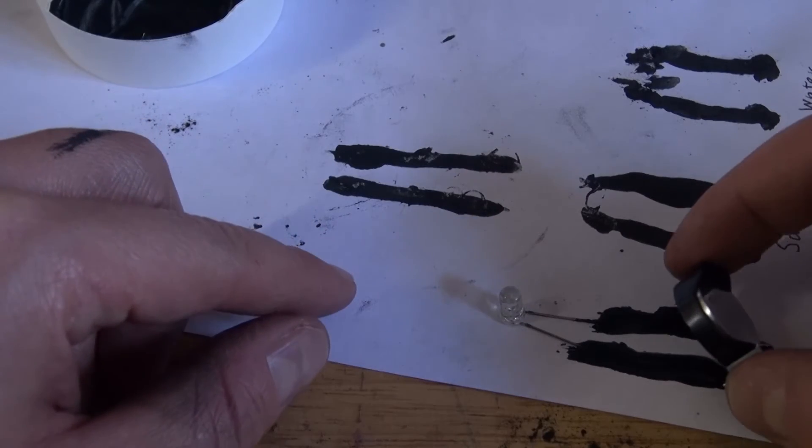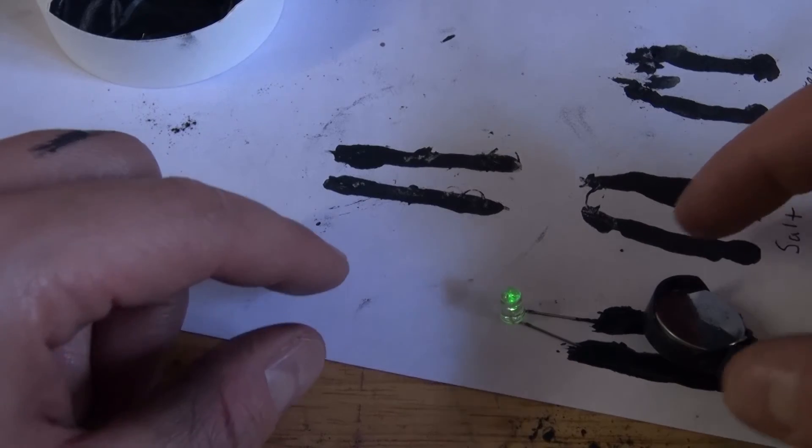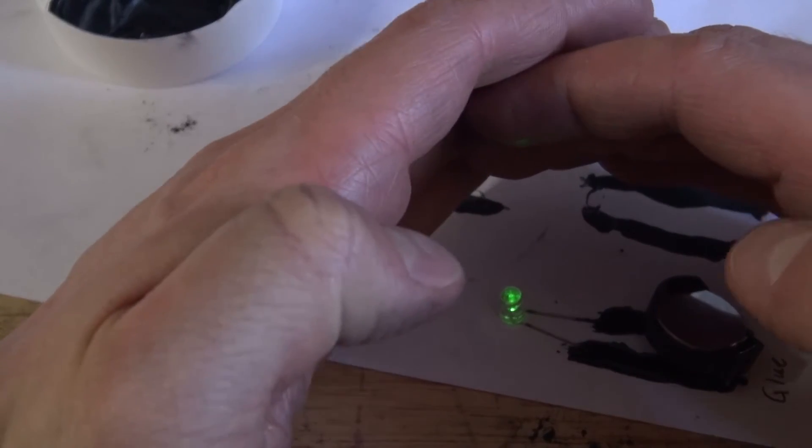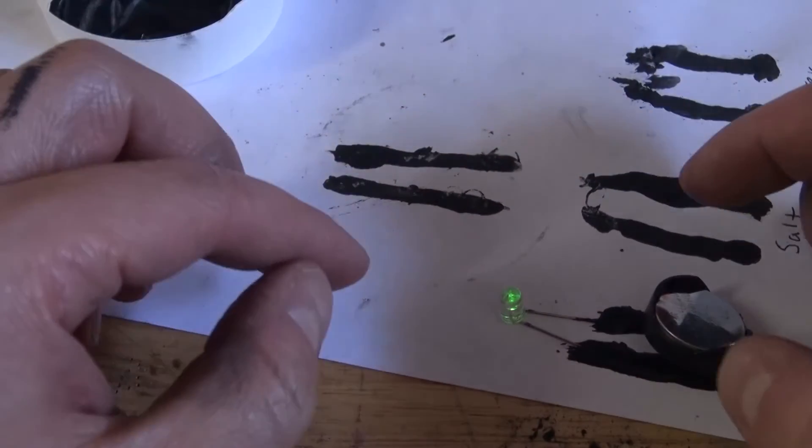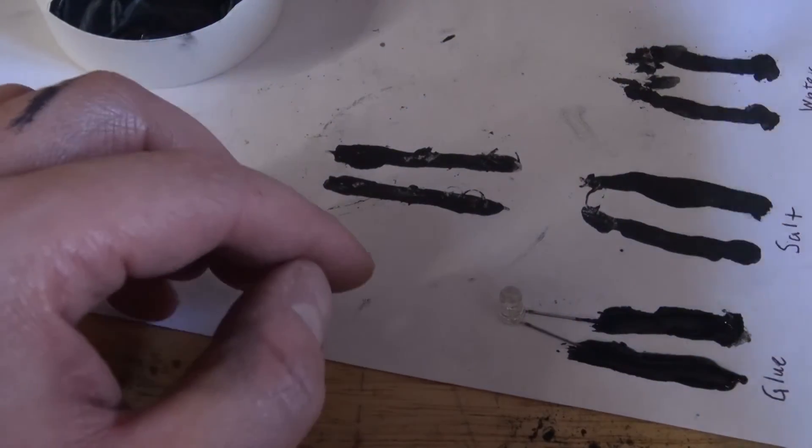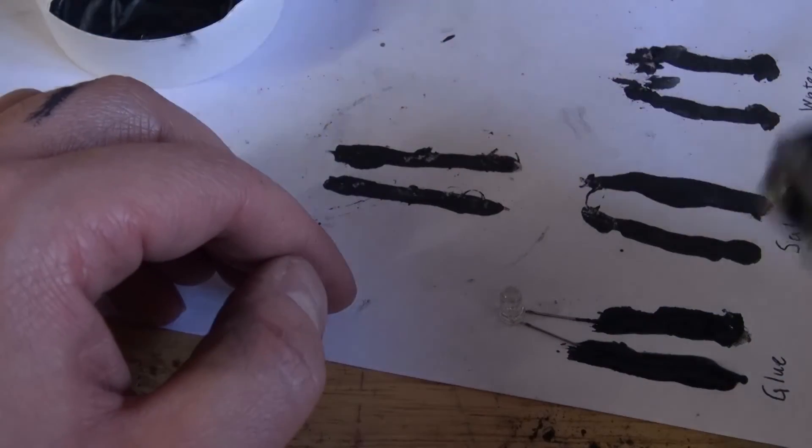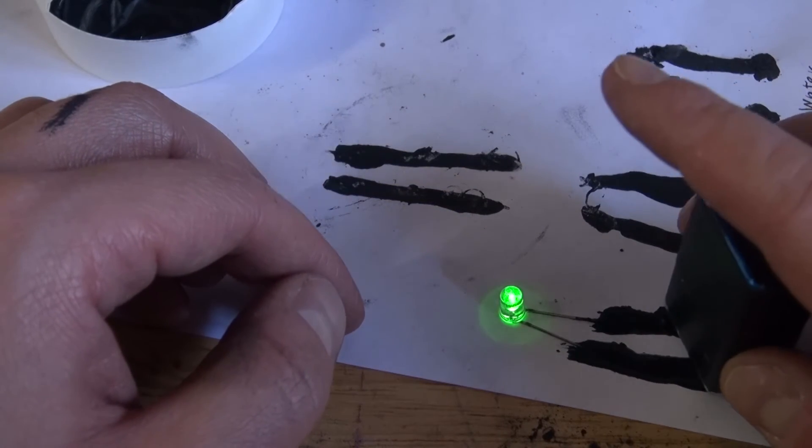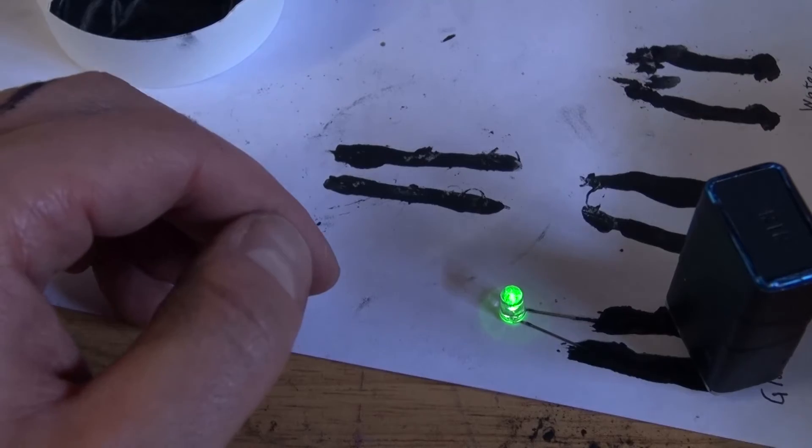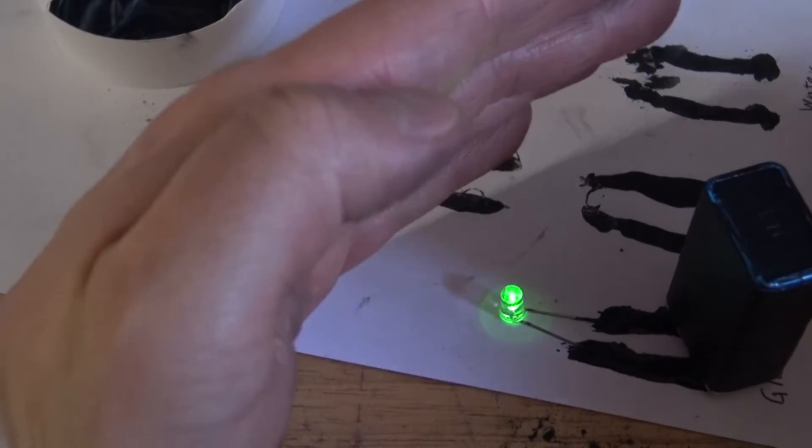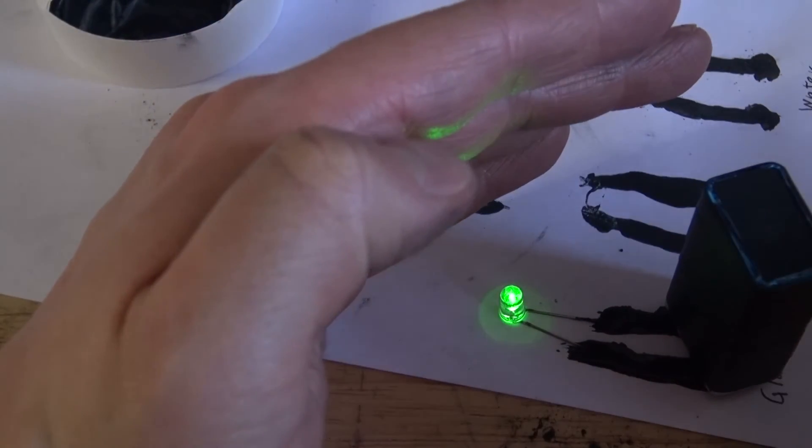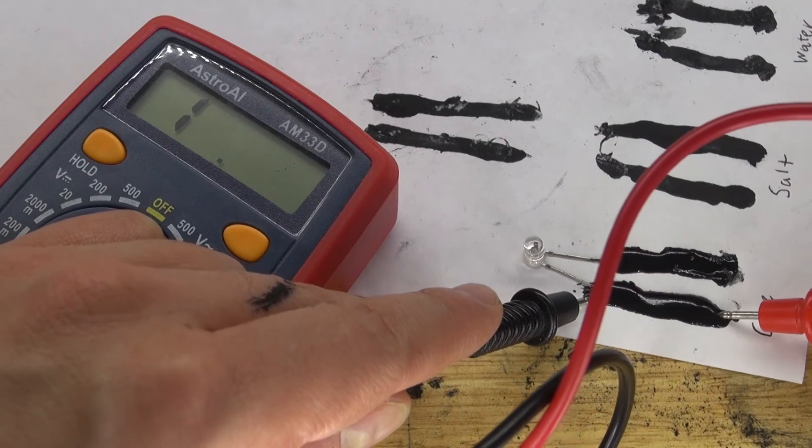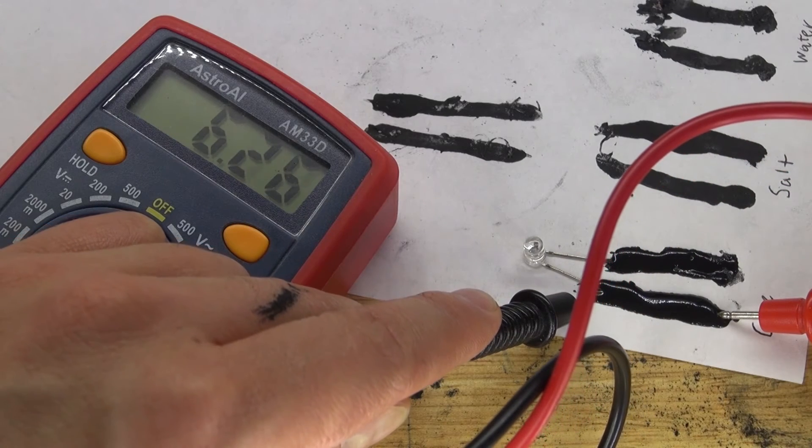Take the 3 volt button cell battery. As you can see, the LED lights up. Not that bright, but it still lights up. Now I can take the 9 volt battery and test it out. Okay, as you can see, it lights up a little bit brighter. Not as bright as the saltwater method, but it still lights up very well. This tells me that there is probably more resistance. Take a measurement. How interesting. It's about 7 kOhms.